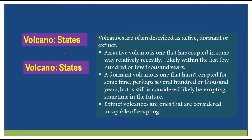Now we'll talk about volcanic states. There are three stages or states of a volcano. Volcanoes are often described as active, dormant, or extinct. An active volcano is one that has erupted relatively recently, likely within the last few hundreds or few thousand years. Those volcanoes have been regularly erupting and there is also a chance they will erupt in the future.